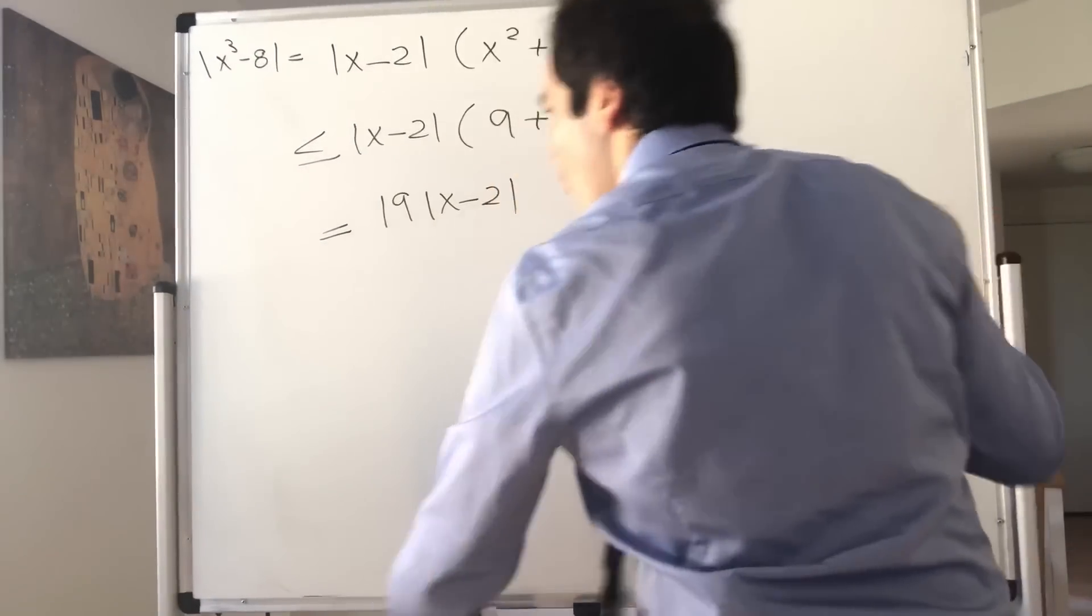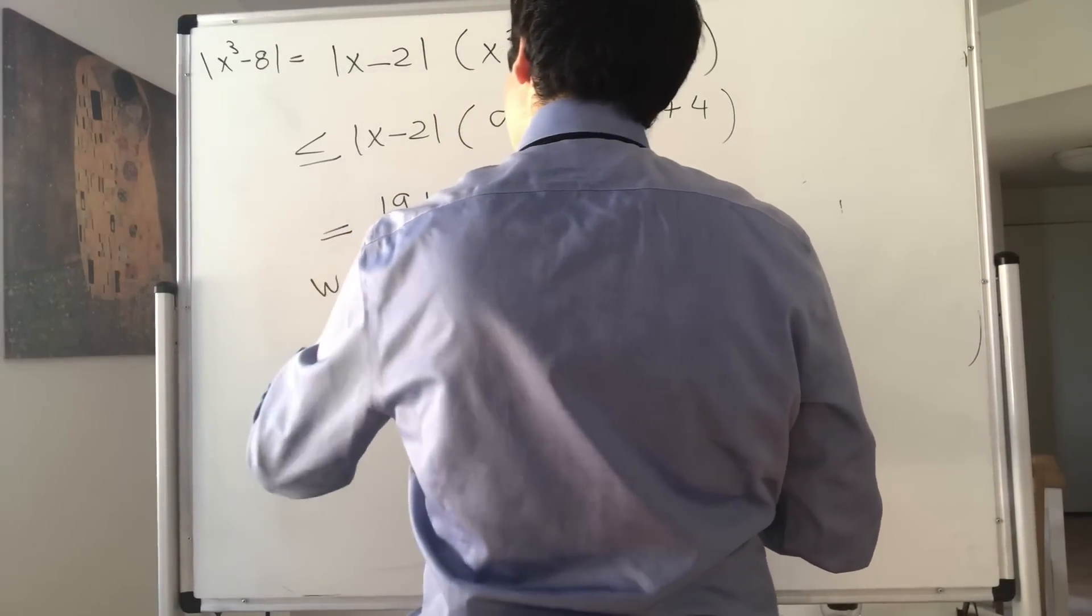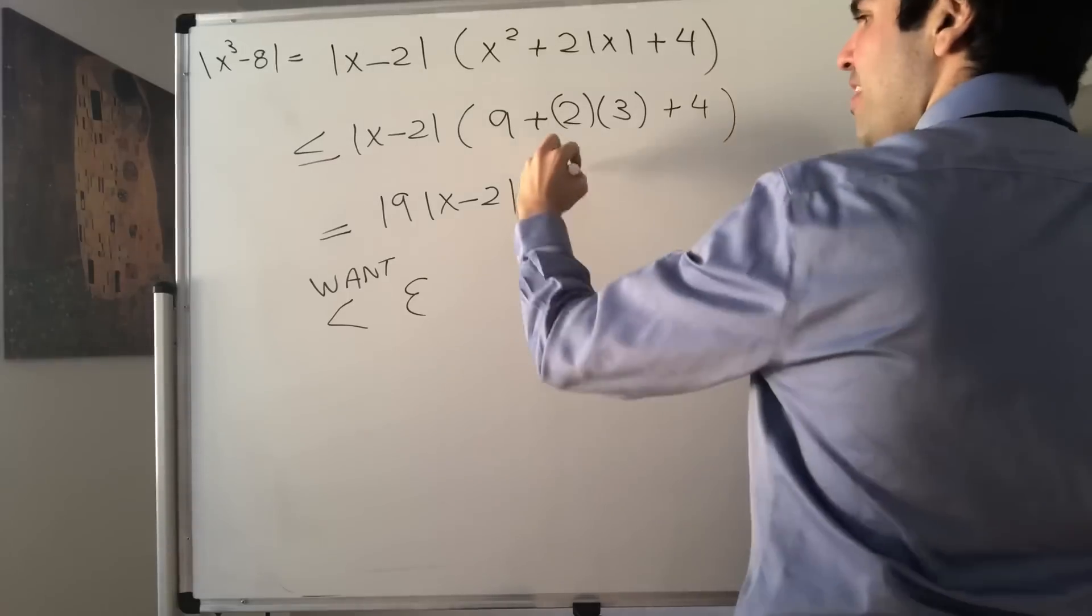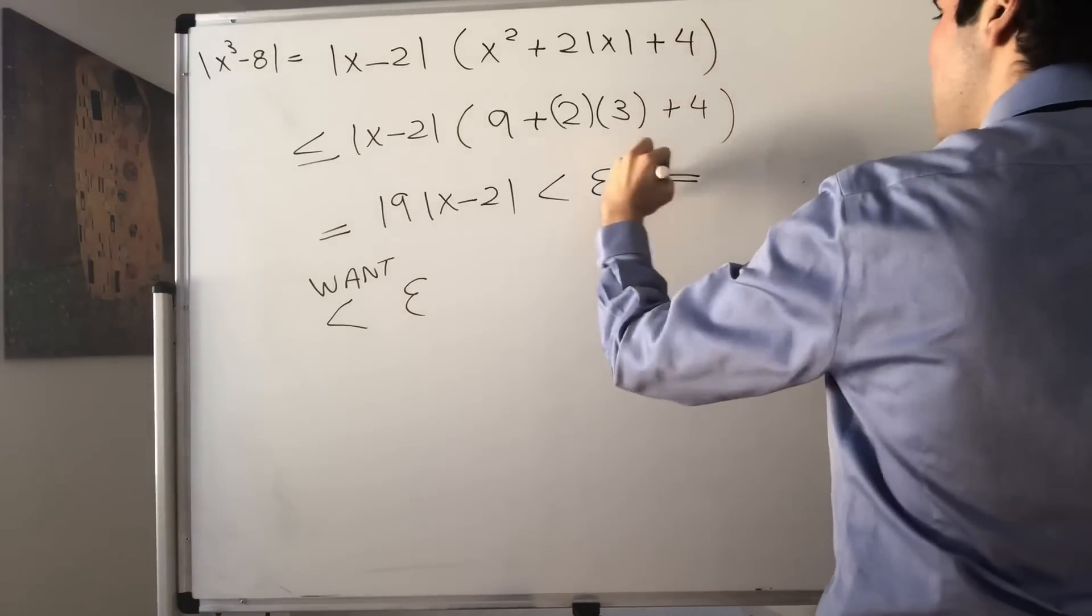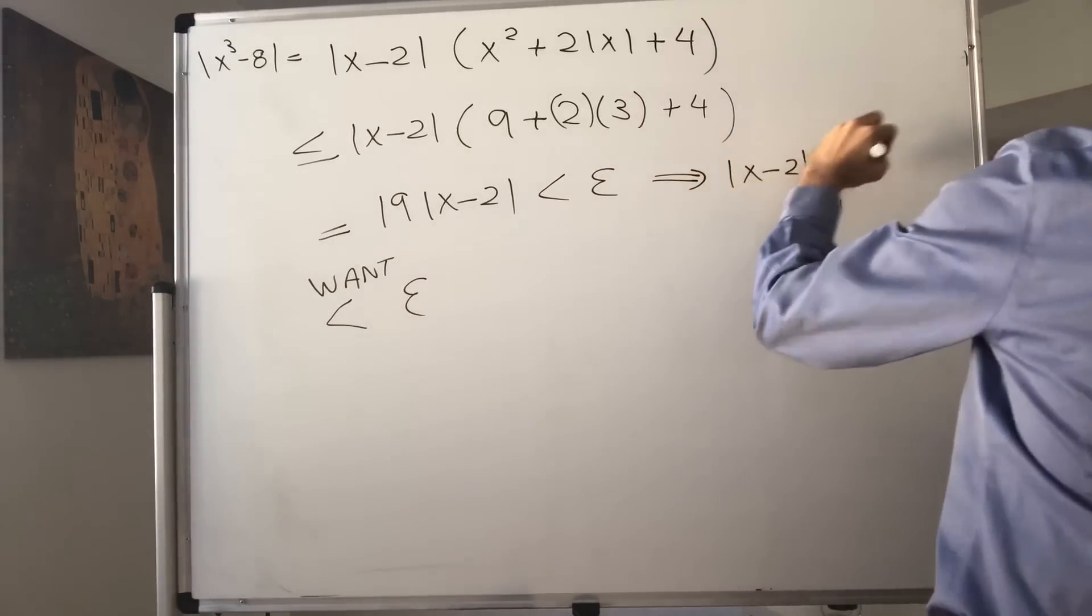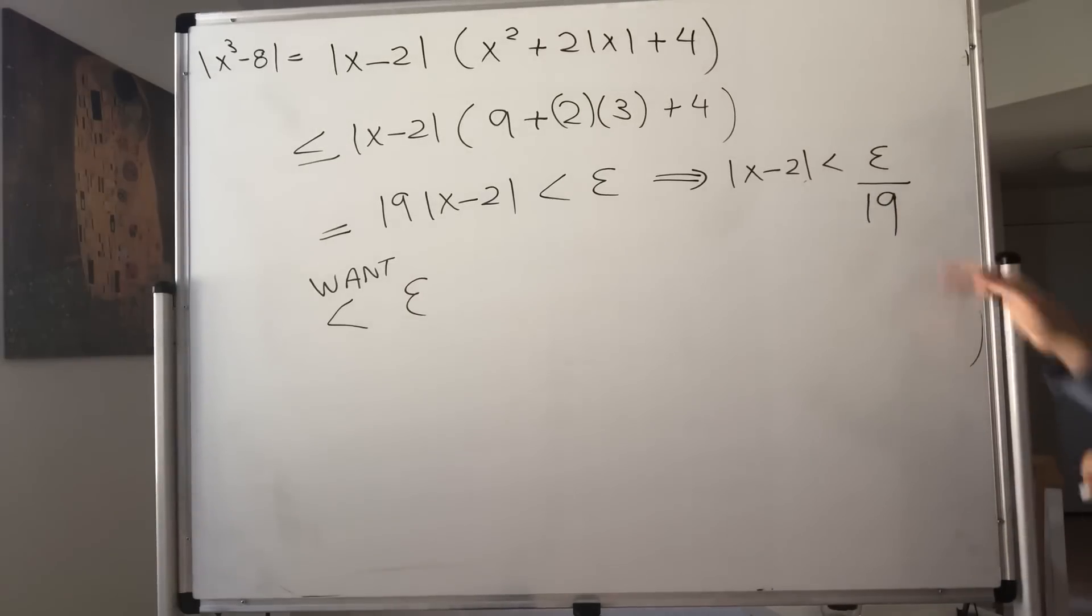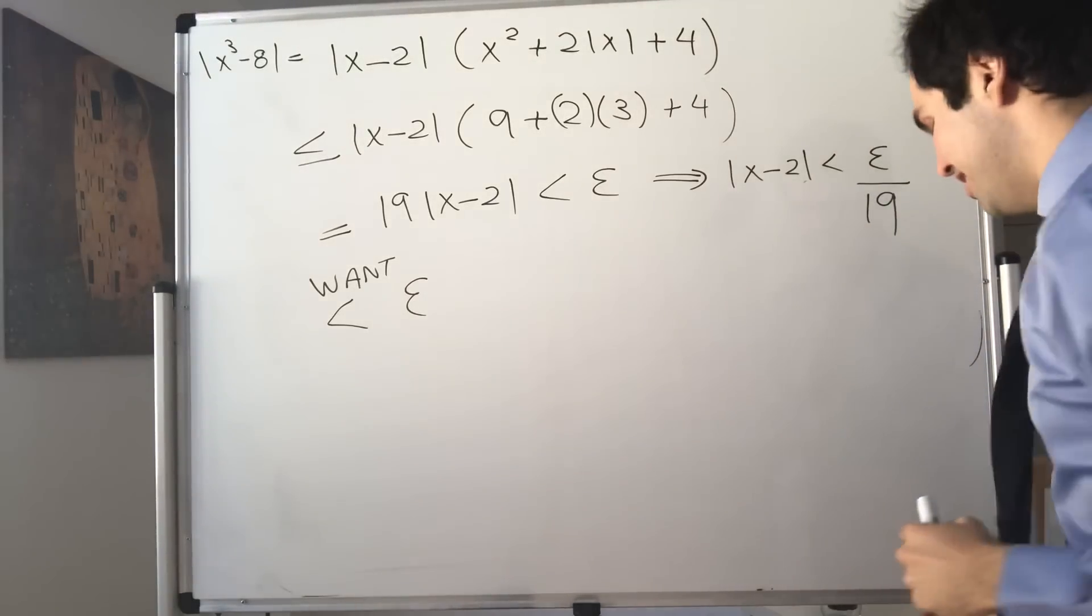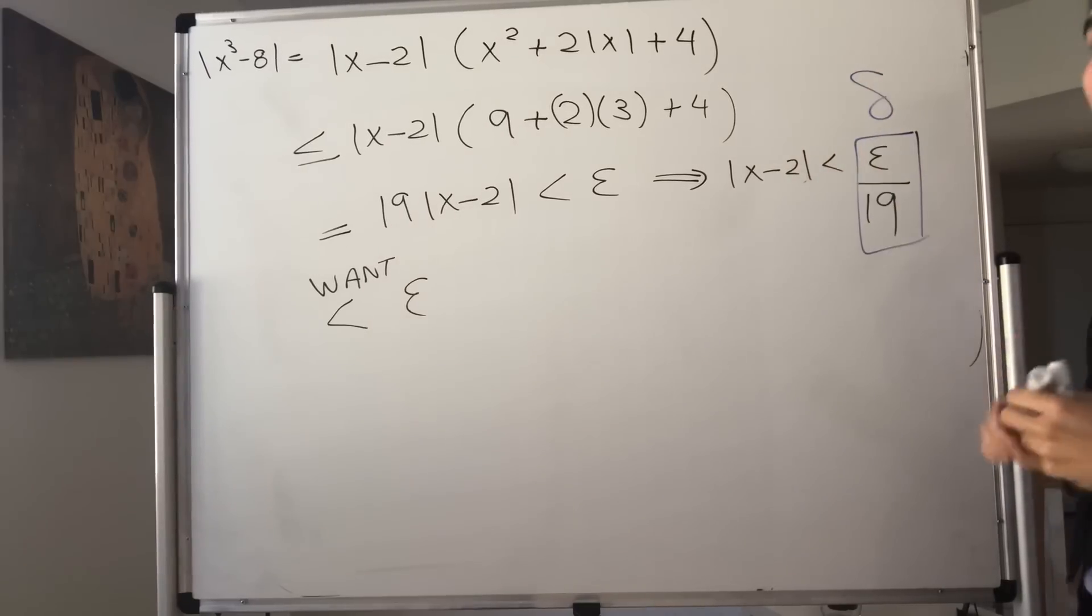Let's do a wanting inequality. We really want this to be less than epsilon. But then what this becomes, 19 times x minus 2 is less than epsilon, so x minus 2 is less than epsilon over 19. This is our delta that we want. We finally found Nemo, and then we can attack.